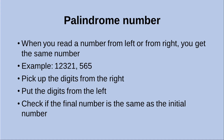For example, when we have this number with five digits, when we read from the left-hand side, it will get the same answer as reading from the right-hand side. So in this case, this is a palindrome number. For another number, when we read from the left-hand side, we will get the same value as reading from the right-hand side. So in this case, it is also a palindrome number.